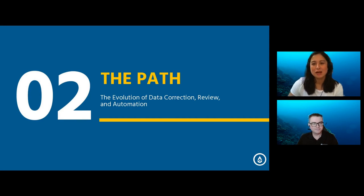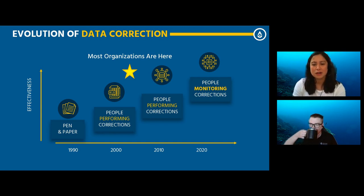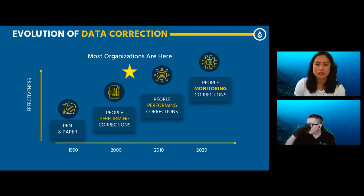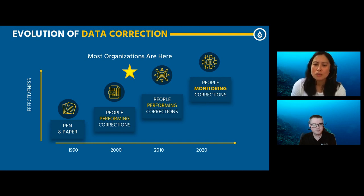I wanted to spend some time looking at the evolution of data correction so that we remember where we started to understand where we are going. The early data correction process started with pen and paper, which many organizations are still doing today. As the amount of collected data increased, organizations turned towards productivity tools like spreadsheets, then hired contractors to build customized tools. This led to the next evolution: homegrown solutions, and then water data management applications that stored data centrally and provided tools to support human data correction work.